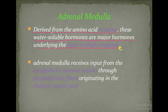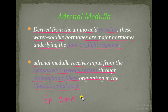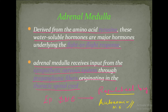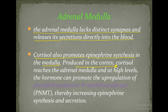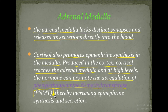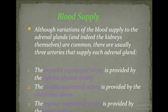These hormones are major hormones underlying the fight-or-flight response. The adrenal medulla receives input from the sympathetic nervous system, meaning epinephrine and norepinephrine are regulated by the autonomic nervous system. The adrenal medulla lacks distinct synapses and releases its secretions directly into the blood. Cortisol also promotes epinephrine synthesis in the medulla — produced in the cortex, cortisol reaches the medulla and at high levels can promote upregulation of phenylethanolamine N-methyltransferase (PNMT), thereby increasing epinephrine synthesis and secretion.